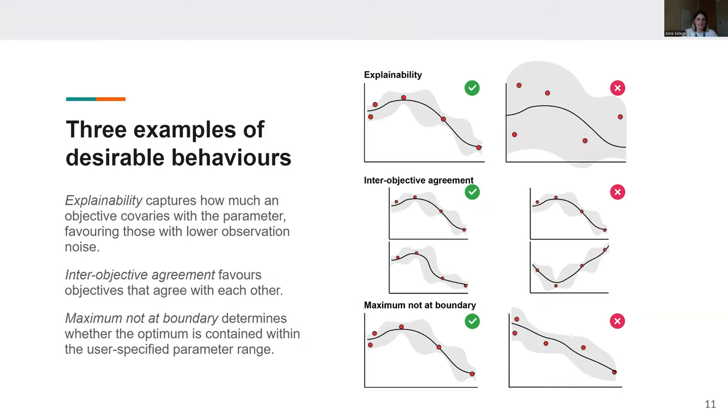Specifically, we propose three examples. And the first one that we call explainability basically favors objectives that explain the data well and have lower observation noise.